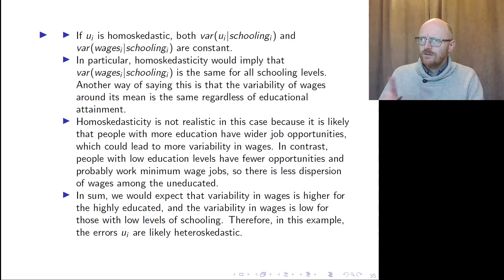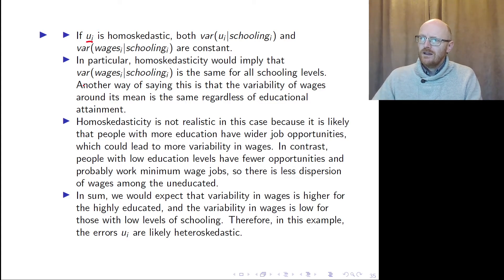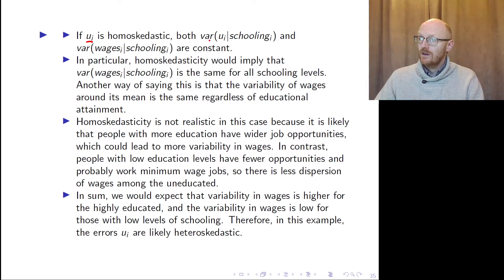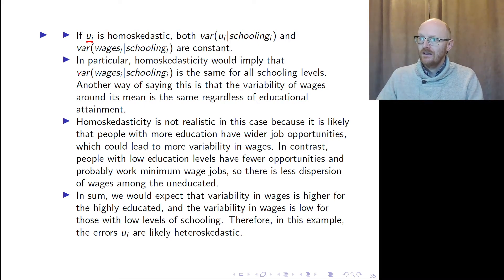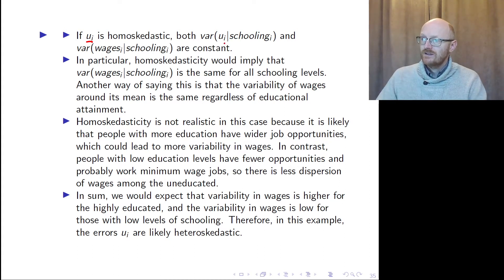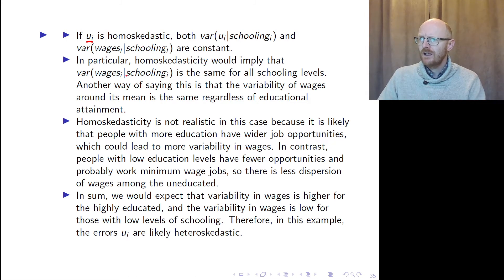What you notice is that if the residuals are homoscedastic, then both the variance of the residuals given the level of schooling and the variance of wages given the level of schooling are constant, because they are equal. Homoscedasticity implies that the variance of wages given schooling is the same for all schooling levels.